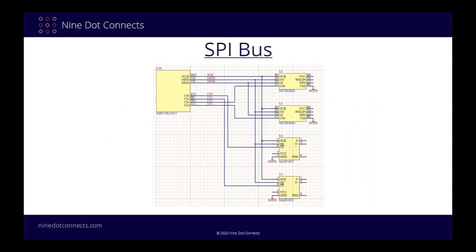Let's look at a real-world implementation of a SPI bus. The design I'm showing here is derived from a design using a Texas Instruments TMS570 MCU as the SPI master device. It has four slave devices on the SPI bus — two flash devices and two thermocouple interface chips. Thus, as we see in the schematics, there are three SPI bus signals and four chip selects. For this demonstration, I will just be looking at the SPI bus signals and ignoring the chip selects.